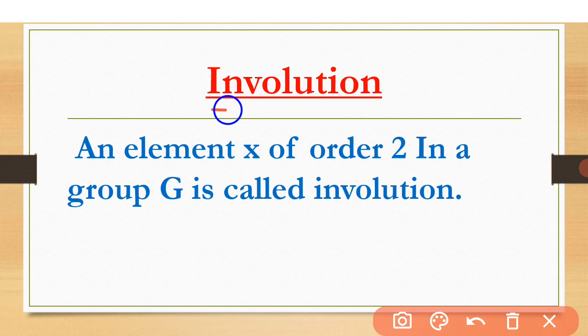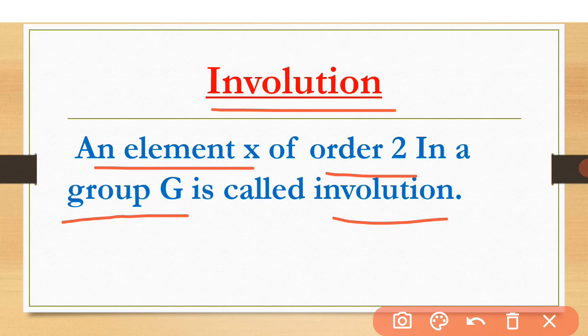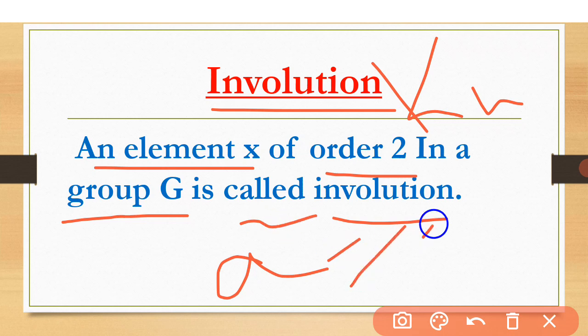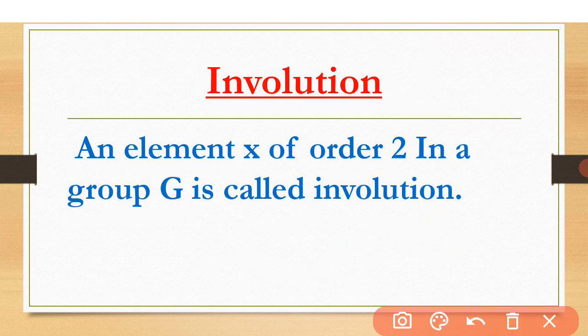Involution. An element x of order 2 in a group G is called an involution. As we learnt in our last lecture, the Klein 4-group K4 has three non-identity elements where a²=e, b²=e, and c²=e. This means a, b, and c are all involutions. It also means that any element which has its own inverse is called an involution.